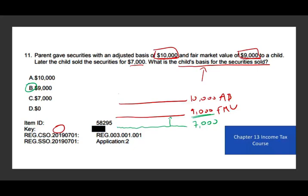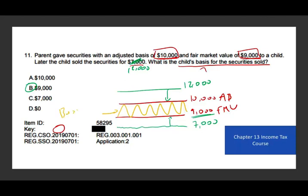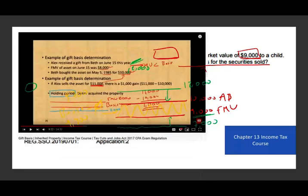To illustrate further: if the asset had been sold for $12,000, the closest line would be $10,000, so the basis would be $10,000. If the child sold the asset between $9,000 and $10,000 — say $9,300 or $9,700 — then the basis equals the sale price, resulting in zero gain and zero loss. That orange area represents a no-gain, no-loss zone. This is covered in my 24-minute gift basis lecture.